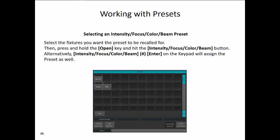For selecting an Intensity, Focus, Color, or Beam preset, it is very similar. Select the fixtures you want the preset recalled for, then press Open and the appropriate attribute family key. Or alternatively, you can type Intensity, Number, Enter; Focus, Number, Enter — and the same with Color and Beam — to assign the preset to the selected fixtures.